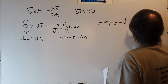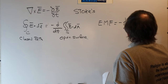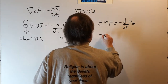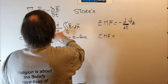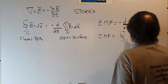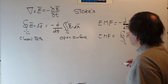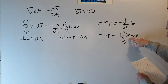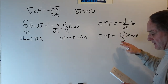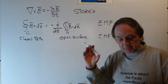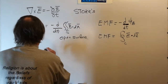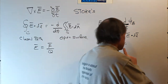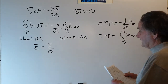We can write Faraday's Law in a shorthand way: the EMF is equal to the negative time derivative of the magnetic flux. The EMF, or electromotive force, is the closed line integral of E dot dL. The electric field intensity is defined as a force that acts on a unit positive test charge — it is the force per unit charge felt by that charge when placed in an electric field.